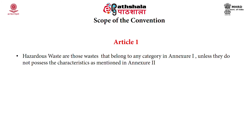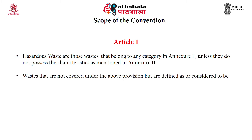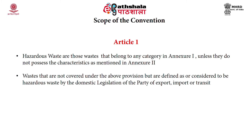The scope of the convention under Article 1 defines that hazardous wastes are those waste that belong to any category in Annexure 1, unless they do not possess the characteristics mentioned in Annexure 2. Also covered are waste not listed above but defined or considered as hazardous waste by the domestic legislation of the party of export, import, or transit. Other waste contained in Annexure 2 are also covered. Article 1 thus makes clear which waste the Basel Convention is applicable to.